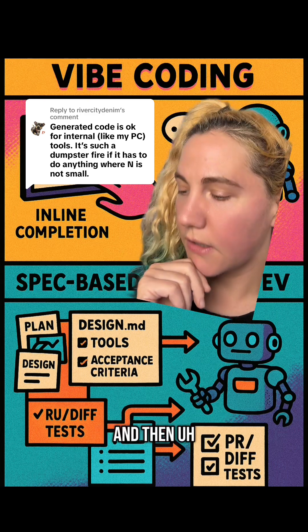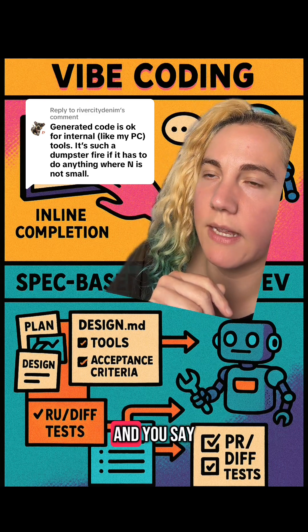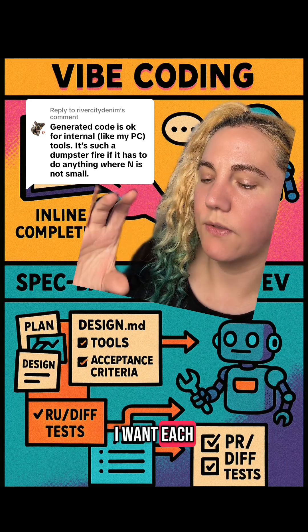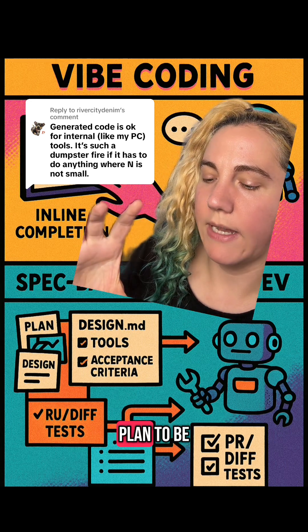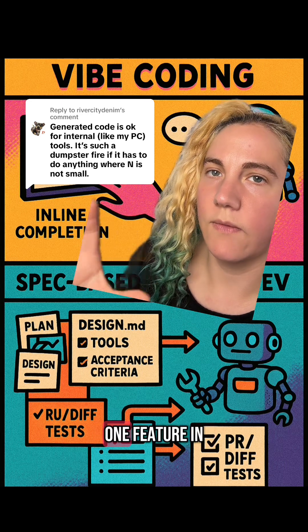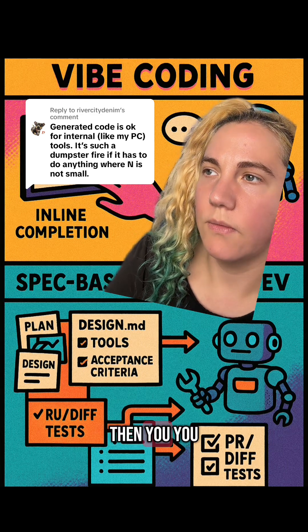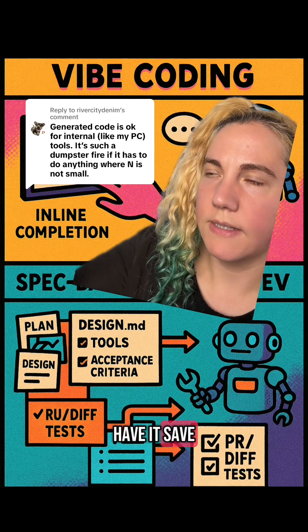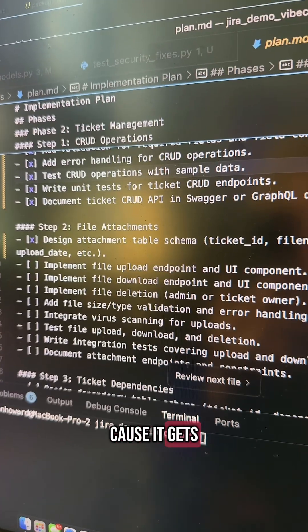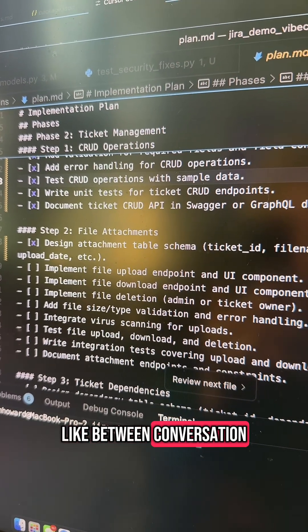And then you have it make the plan and you say, look, I want each phase of the plan to be one pull request in size, one feature in size. And then you have it save all that stuff because it gets lost between conversations.